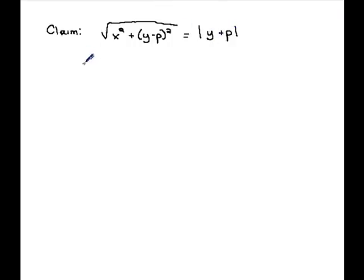If you square both sides, we get X squared plus the quantity Y minus P being squared equals, if you square this side, the absolute value disappears. It's just Y plus P being squared, because once you square something it makes it positive, unless it's an imaginary number.